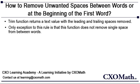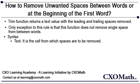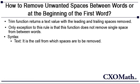Before we jump into the example, let's look at the syntax for the TRIM function. There is only one argument in TRIM function and it is called text. Text is essentially the text or the cell you want to streamline or remove spaces from. This can be a cell reference to where the text is stored.